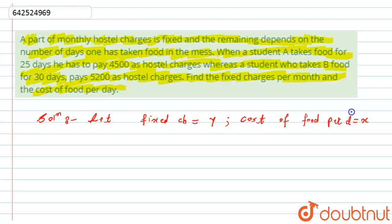Now if I look at this sentence, when student A takes food for 25 days he pays rupees 4500. It means the student is taking food for 25 days, one day charge is x, plus he is paying the fixed charge y, and this amount equals 4500. So this is equation number one.